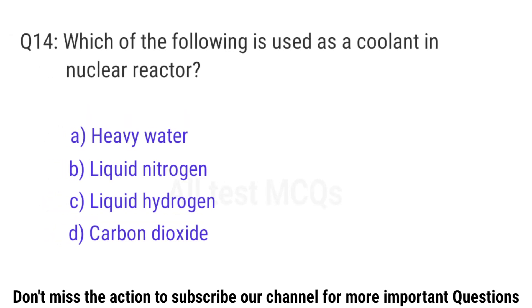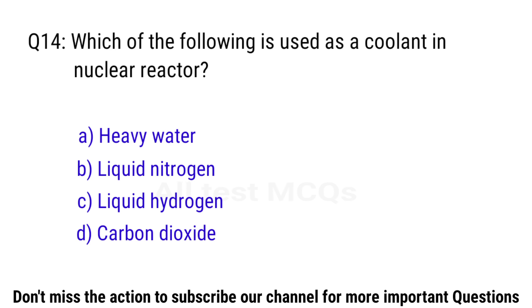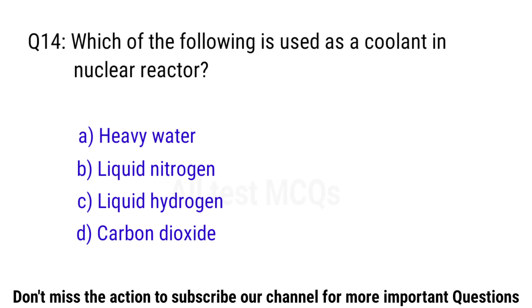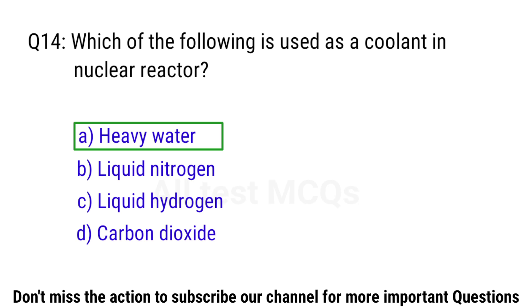Q14. Which of the following is used as a coolant in a nuclear reactor? The right answer is option A. Heavy water.